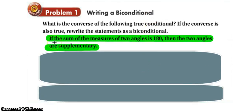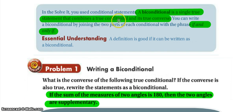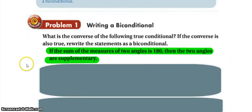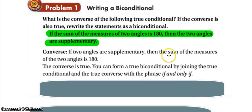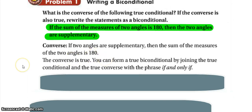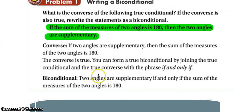In problem one, the statement is: if the sum of the measures of two angles is 180, then the two angles are supplementary. The converse would be: if angles are supplementary, then the sum of their measures is 180. This converse is true. So we form the bi-conditional by saying: two angles are supplementary if and only if the sum of their measures is 180 degrees.